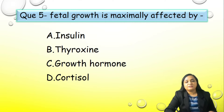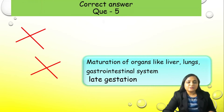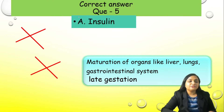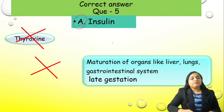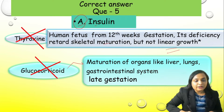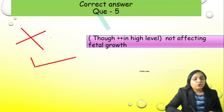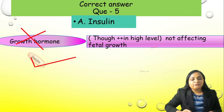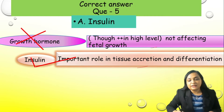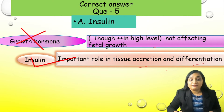Question number 5: Fetal growth is maximally affected by — A) insulin, B) thyroxine, C) growth hormone, or D) cortisol. The correct answer is A, insulin. Thyroxine has no effect on linear growth — it affects skeletal maturation. Glucocorticoid affects organ maturation but not growth directly. Growth hormone has no effect on fetal growth. Insulin affects tissue accretion and differentiation, which is why infants of diabetic mothers are important clinically — insulin has maximum effect on fetal growth in the intrauterine period.